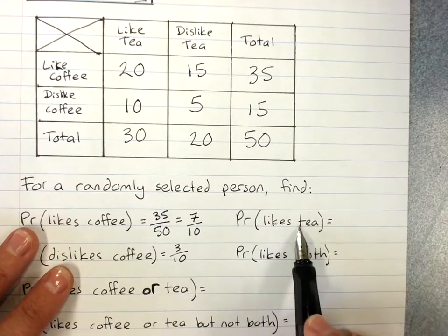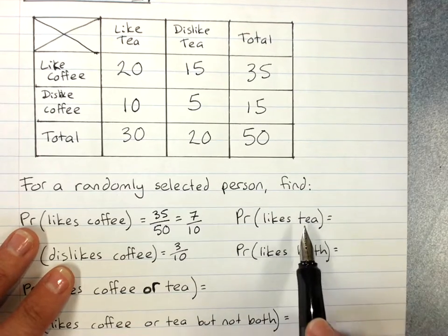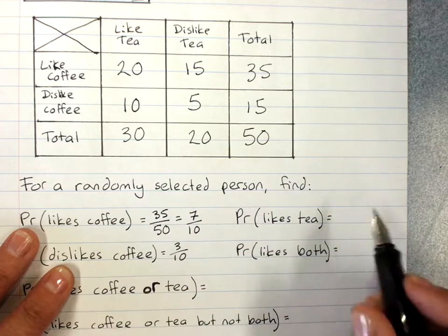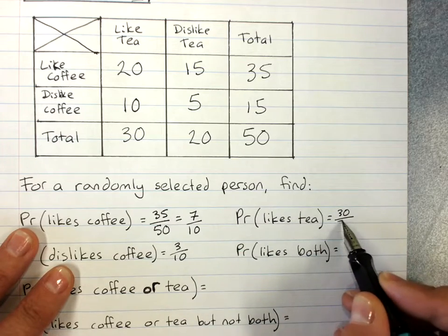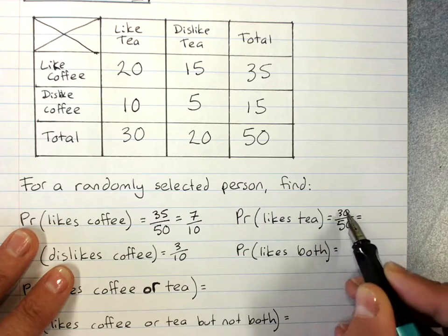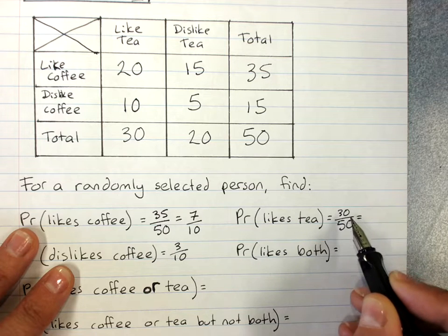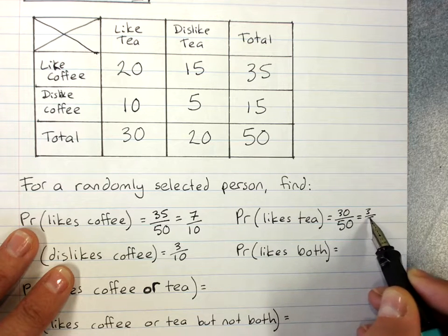The probability that they like tea. We need the total number of people who like tea: 30 out of 50. We can simplify that by dividing by 10 on the top and 10 on the bottom to get 3 over 5.